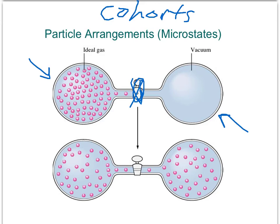Basically, even with only 50 particles, the math starts to get a little too hairy. So what we're going to do is simplify the system even more. But before doing that, let's introduce one more term: a particular arrangement of the particles within the system, among the cohorts, is referred to as a microstate.